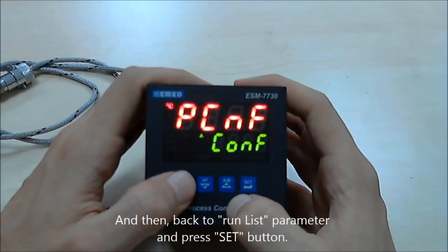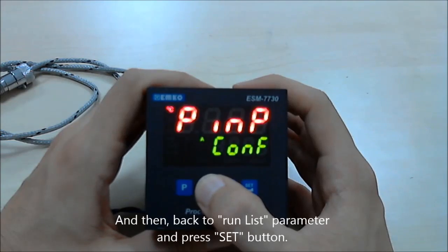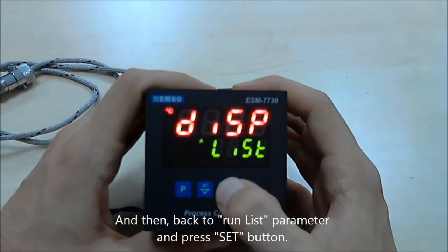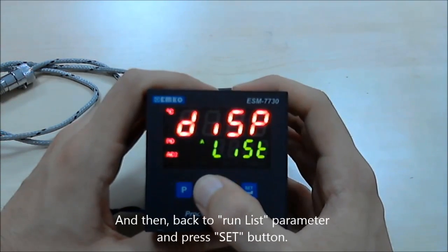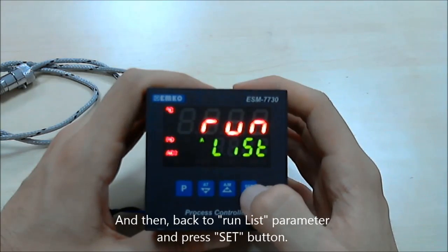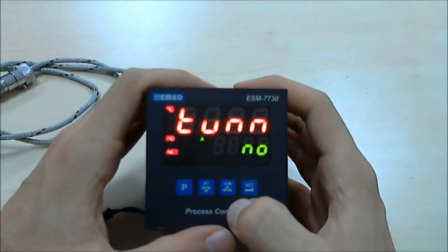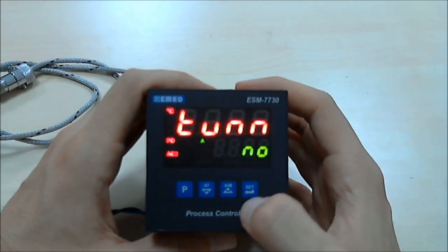And then come back to the run list. Press set button and then you will see the tuning selection parameter.